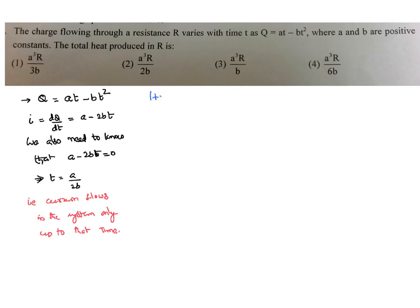Now I can write the heat generated in the system as dq equals i squared r dt, or else i squared r dt. To get the total heat generated, I shall integrate the equation: integral of i squared r dt.